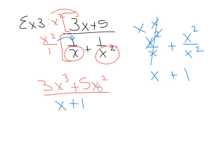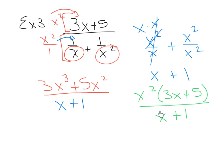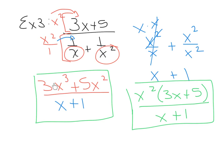The numerator does factor — we can take out a GCF of X squared, leaving 3X plus 5. Notice that's the same expression we started with on top: X squared times (3X plus 5). The denominator is still X plus 1. Nothing reduces because X squared cannot reduce with X plus 1 — only identical binomials reduce with each other, and these don't match. This is your final answer, though most teachers would accept the unfactored form as well.